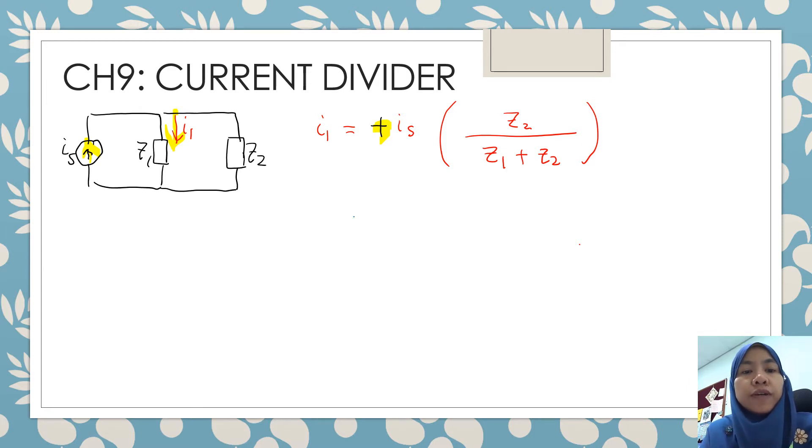What about if you want to find I2? The current is flowing through impedance 2, but this is the same direction as your I source. Then I2 will be equal to the current source as usual, and then the opposite of impedance 2, the element is impedance 1, divided by the parallel of these two impedances, summation of Z1 plus Z2.